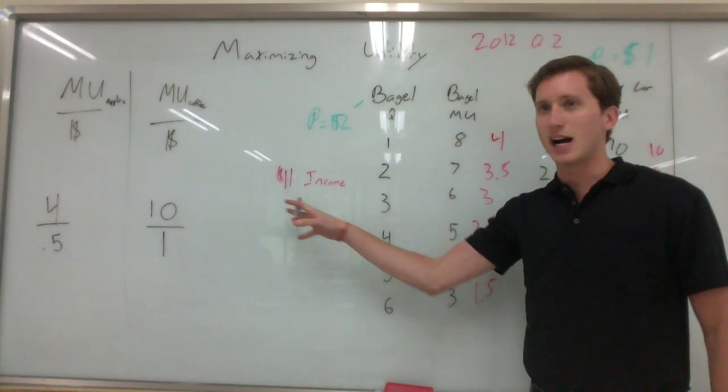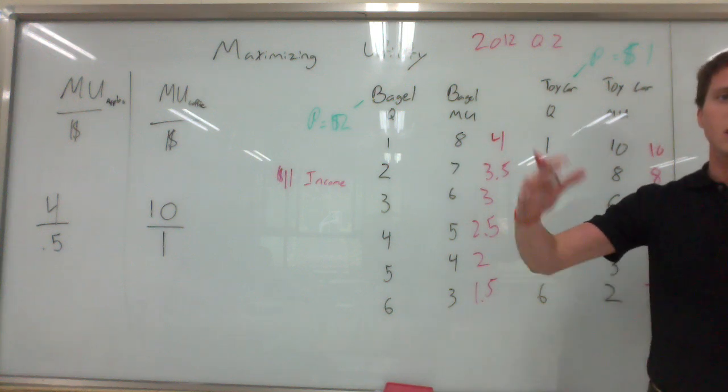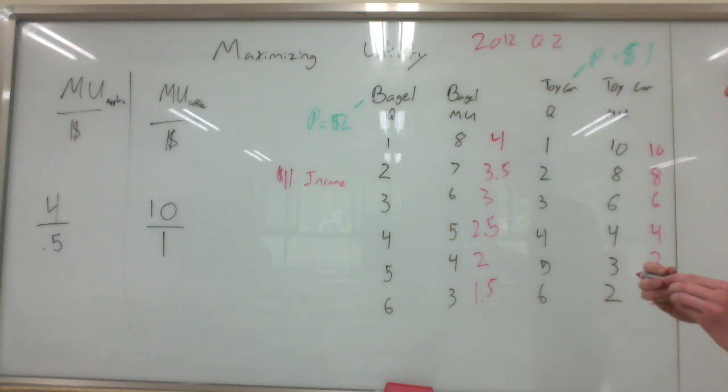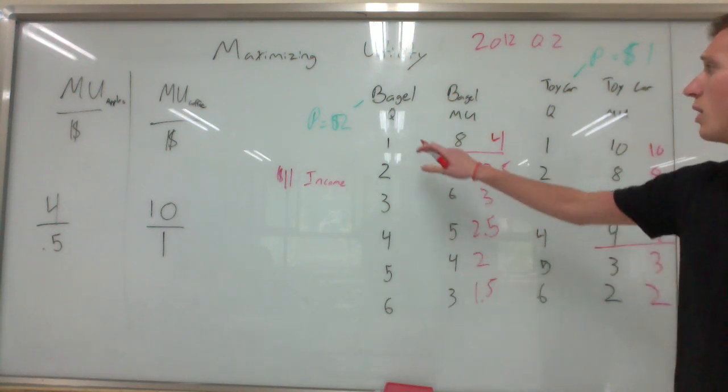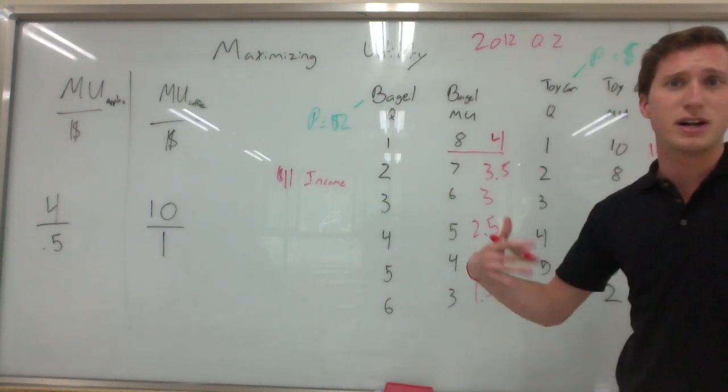I've got to think about, we only have $11 worth of income. If we had an unlimited income, we could buy all of these things and have lots of utility. But we only have a limited amount of money, so we have to kind of limit things. We have to find a number that matches up. So first off, you see four and four. All right, that's not bad. We can have one bagel and four toy cars. But one bagel is going to cost us $2, and four toy cars cost us $4. So it's going to be $4 plus $2, $6. We still have a lot of money left over.